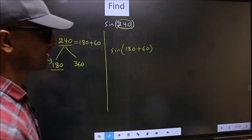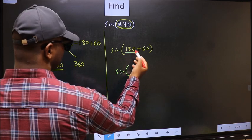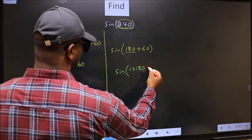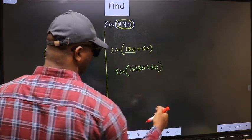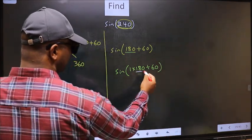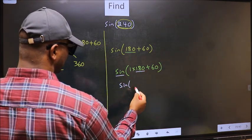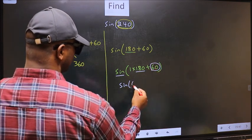Next, sine. In place of 180, now I write 1 into 180 plus 60. Next, here we have 180, so sine is not going to change. It will remain sine. And inside, we get this angle, 60.